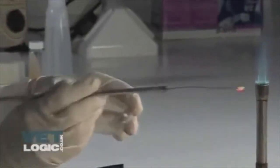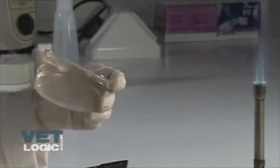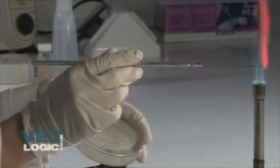Heat the loop again and make a fourth well by drawing bacteria once from the third well. Heat the loop again.